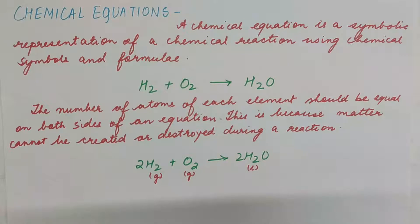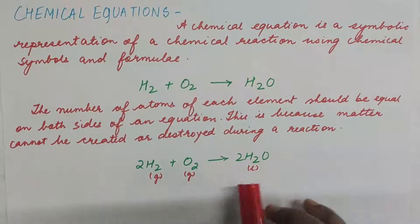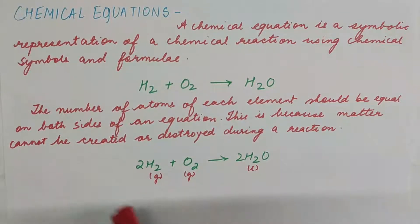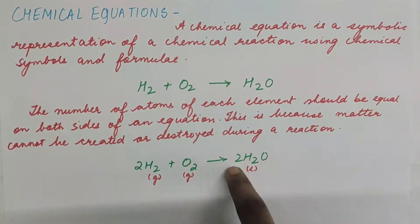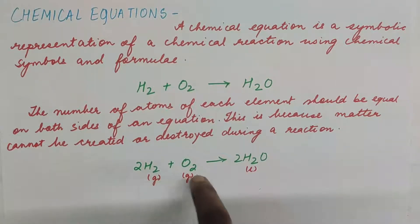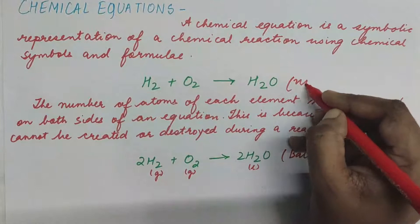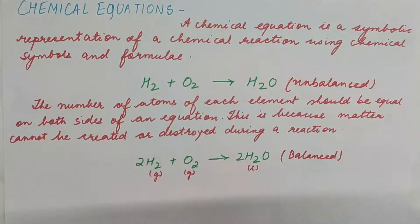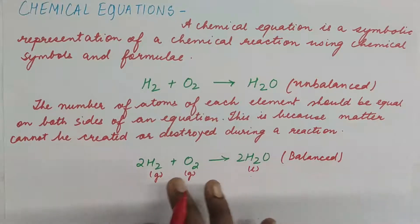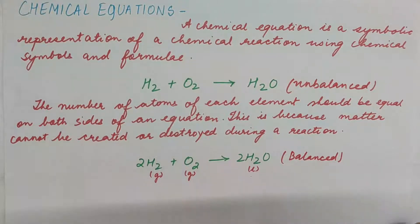Only then can we say it is a balanced chemical equation, because matter cannot be created nor destroyed during a chemical reaction. This can be done by adjusting the number of atoms on both sides. Two molecules of hydrogen react with one molecule of oxygen to form two molecules of water — G stands for gas and L for liquid. This becomes a balanced chemical equation, and the one written previously is unbalanced. When you write an equation in chemistry, it should always be balanced, and it will tell you exactly the number of molecules of each element or compound in the reaction.